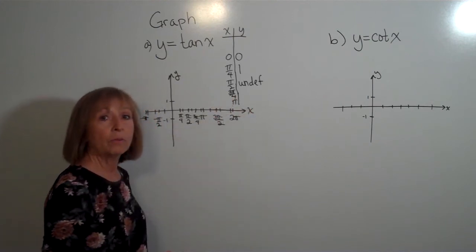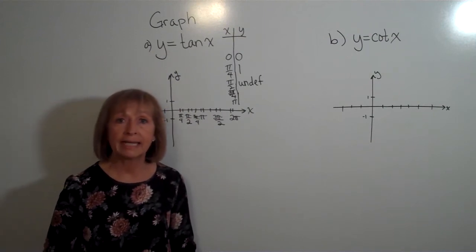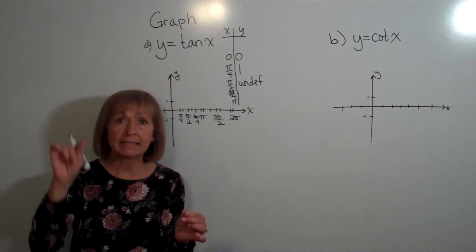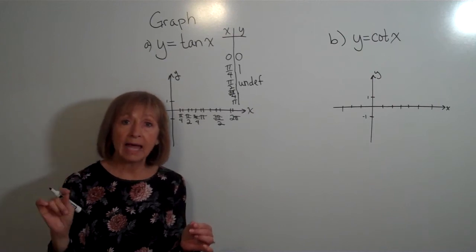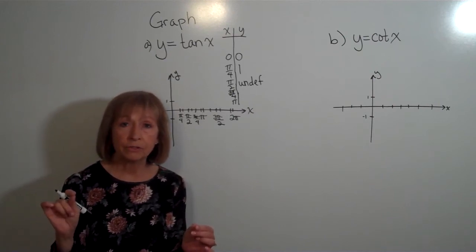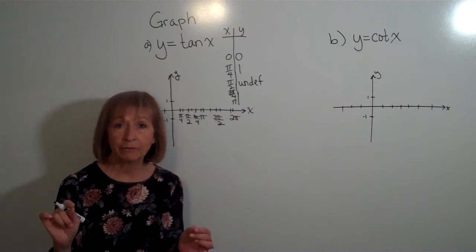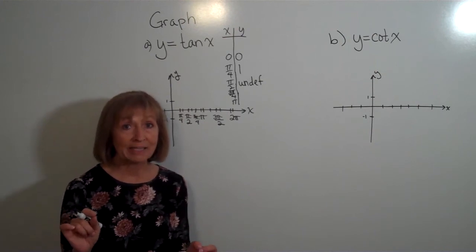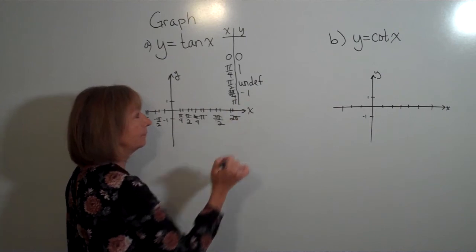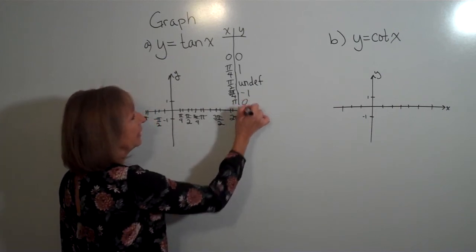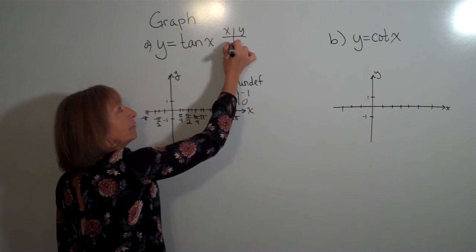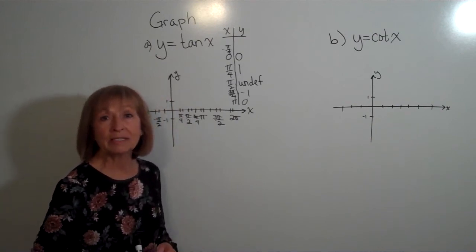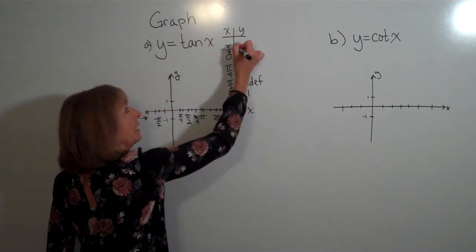At 3 pi over 4, which is a second quadrant angle, we go left and up from the origin. The sine of 3 pi over 4 is positive square root of 2 over 2, but the cosine of 3 pi over 4 is negative square root of 2 over 2. A number divided by its opposite gives negative 1. At pi, the tangent is 0 again. At negative pi over 4, a fourth quadrant angle, we again get negative 1.